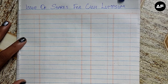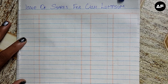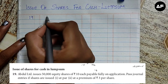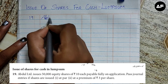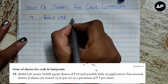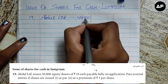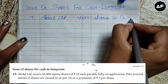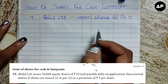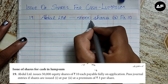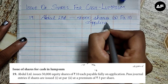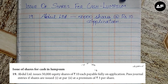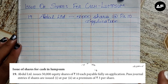In this video we are going to see a sum which relates to issue of shares for cash in lump sum. This is sum number 19 from the 12th standard Samacheer book, and it is about Abdul Limited. Abdul Limited has issued 50,000 shares of rupees 10 each. The face value of the share is 10 each, payable on application — meaning the entire amount is payable at the application stage itself, with no split into allotment or first and final call.